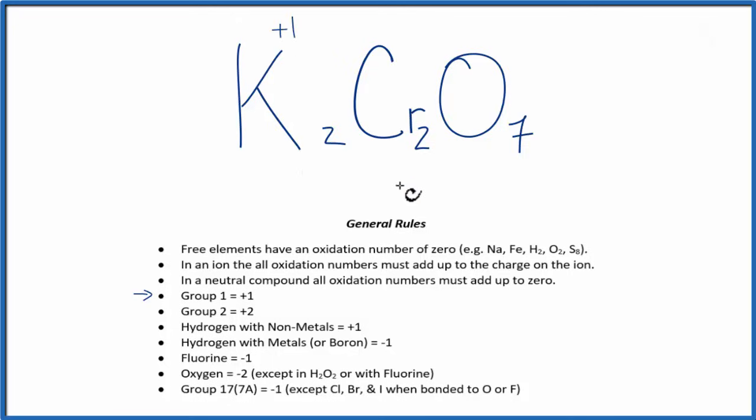The chromium we don't know. That's not in our list. But we do know that oxygen is almost always minus 2, with a few exceptions. So each of these 7 oxygens, each one, is a minus 2.